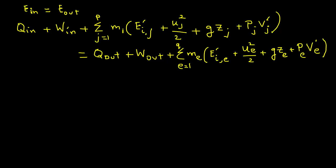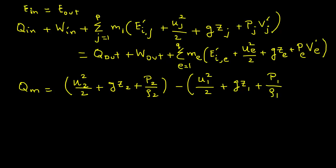So if we have only one inlet and one exit in the system, then we can write this whole expression as QM, and QM will be the transfer of heat per unit mass, in parentheses, will equal, in parentheses, U2 square divided by 2, plus GZ2, plus P2 divided by rho 2, end of parentheses, minus, in parentheses, U1 square divided by 2, plus GZ1, plus P1 divided by rho 1, end of parentheses.